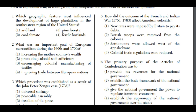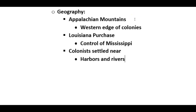The first question on geography will often be about this. You should know all three colonial regions. Also always remember the Appalachian Mountains as the western edge of the colonies. The Louisiana Purchase, if it comes up in a geography question, was about control of the Mississippi River. Colonists settled near harbors and rivers because the point was to export stuff — you need to get people and goods to and from, so a harbor or river highway was always important.